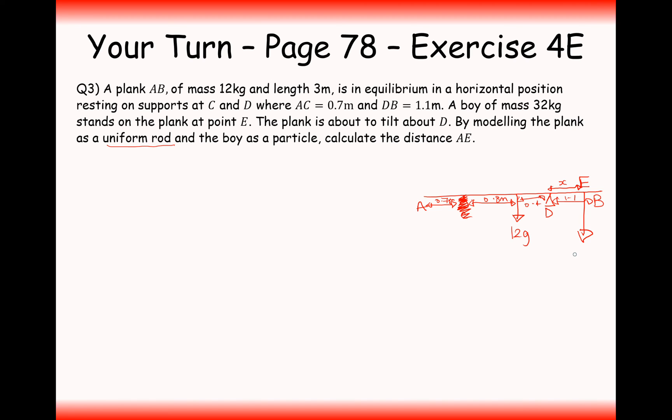In this case here, the boy weighs 32 kilograms, so 32g. For this question, I'm going to be taking moments around the point D. The first moment, which is going to be the anticlockwise moment, is 0.4 times 12g. This is going to be equal to X times 32g. We can cancel out the g's from both sides. It's going to be 0.4 times 12 divided by 32, and that gives us 0.15 as the value for X.